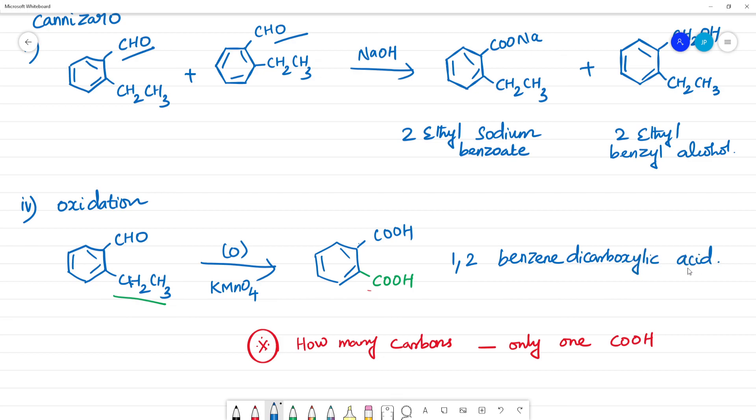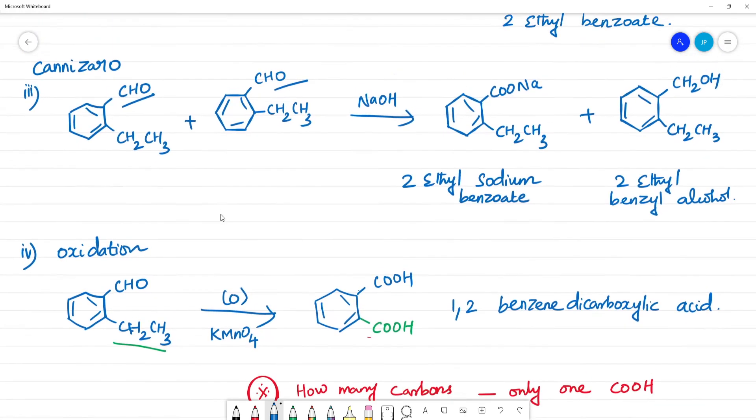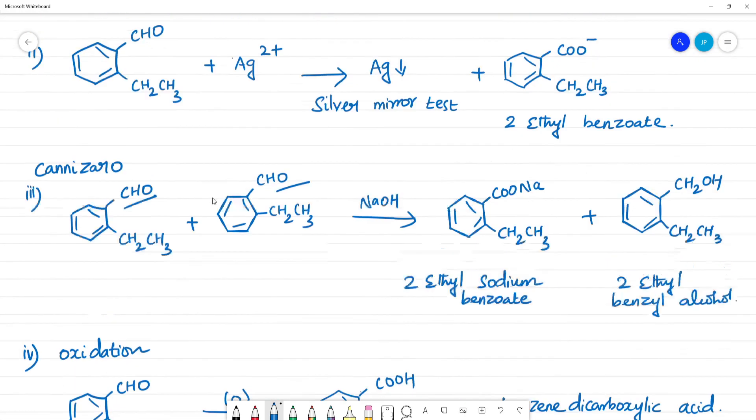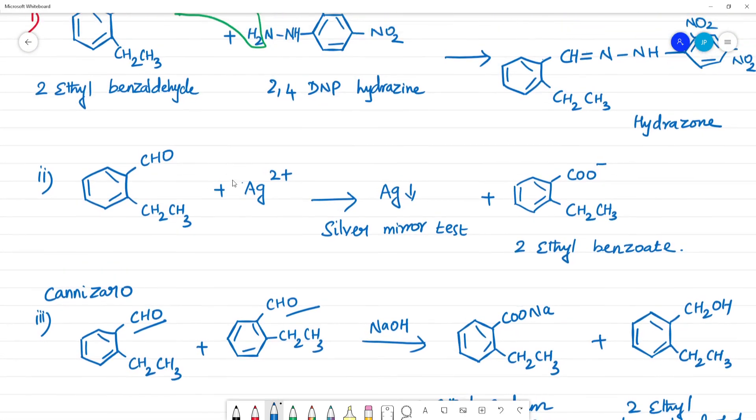The product is 1,2-benzene dicarboxylic acid — with COOH groups at the first and second positions on the benzene ring. These are the four reactions we need to know for this compound.